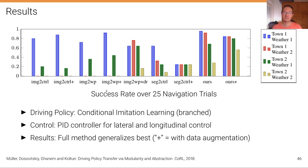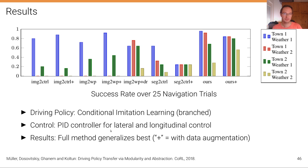The driving policy used is a standard conditional imitation learning policy — the branched version from the original CIL paper, as discussed in the previous lecture. The controller is implemented as a PID controller for both lateral control (steering) and longitudinal control (acceleration and braking).